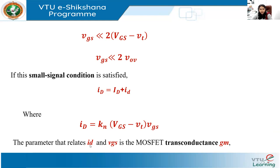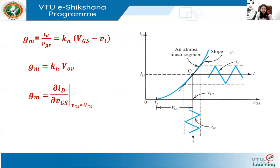The parameter that relates id to vgs is the MOSFET transconductance gm. So gm = id/vgs = KN·(VGS − VT) = KN·VOV. The formal definition of transconductance is gm = ΔID/ΔVGS, the ratio of the change in drain current to the change in gate-to-source voltage.